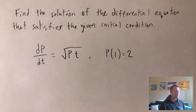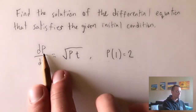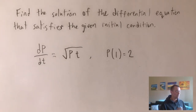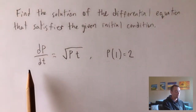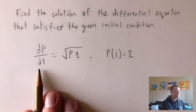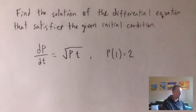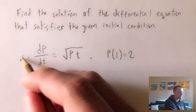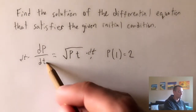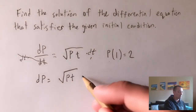With separable differential equations, the first thing you want to do is separate your variables. We need to get our T and DT on one side of the equation, and our P and DP on the other side. Since dp/dt is already by itself on one side, we want P's on the left where DP is. We start by multiplying both sides by DT, which cancels DT on the left and gives us DP equals the square root of P times T times DT.